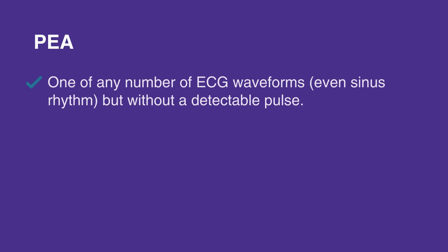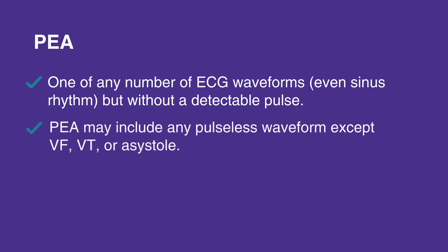PEA is one of any number of ECG waveforms, even sinus rhythm, but without a detectable pulse. PEA may include any pulseless waveform except VF, VT, or asystole.